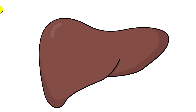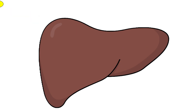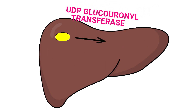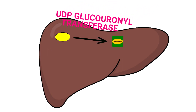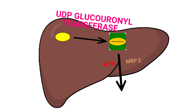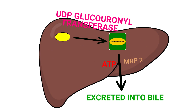Now let us look closely at what happens in the liver. Bilirubin enters the liver with the help of OATP. Then, with the enzyme action of UDP-glucuronosyltransferase, bilirubin gets bound to glucuronate and forms bilirubin diglucuronide. This bilirubin diglucuronide, in the presence of MRP2 and with the expenditure of ATP, is excreted out into bile.